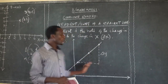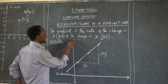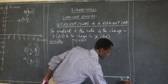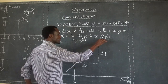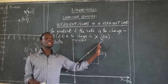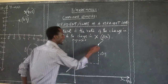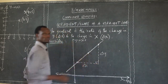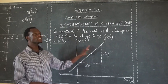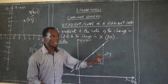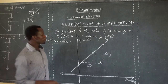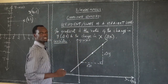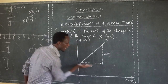What is change in y and what is change in x? Consider this the y-axis and this the x-axis. If I've drawn this line and I want to determine the slope, I draw a dotted line to form a right-angle triangle. My intention is to determine what is the change in y and what is the change in x. The change in y is located along the vertical axis.